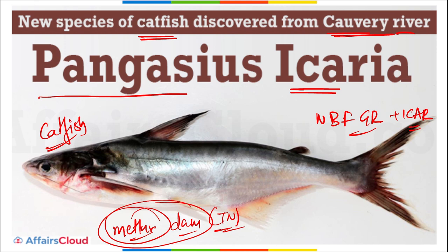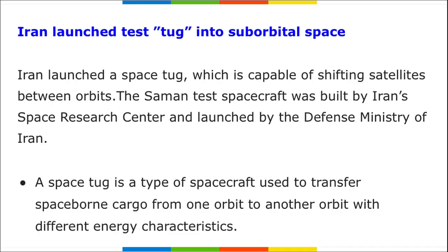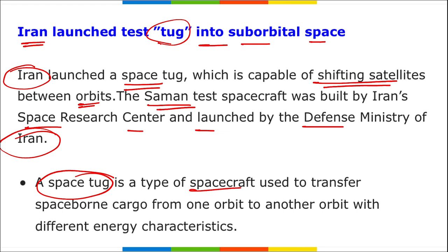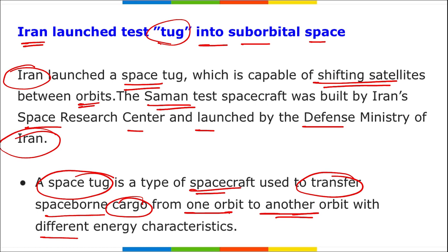Iran has tested a space tug into suborbital space. The Saman test spacecraft, capable of shifting satellites between orbits, was built by Iran's Space Research Center and launched by the Defense Ministry of Iran. A space tug is a spacecraft used to transfer spaceborne cargo from one orbit to another with different energy characteristics. Iran unveiled the Saman test aircraft in 2017 and also launched a solid-fuel rocket into space in 2022.